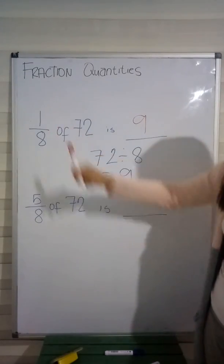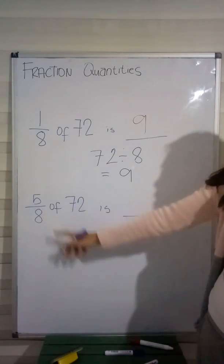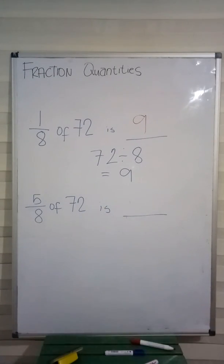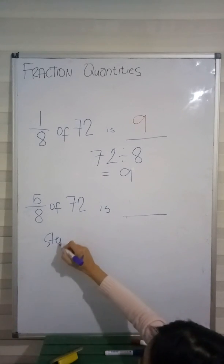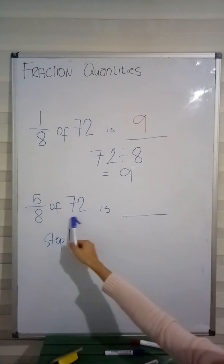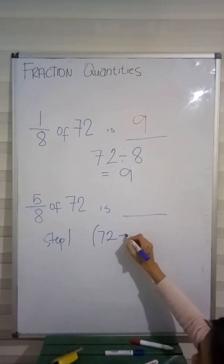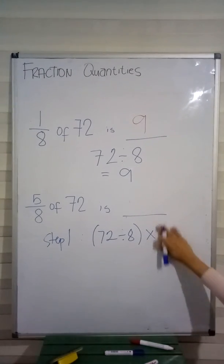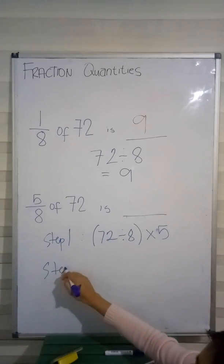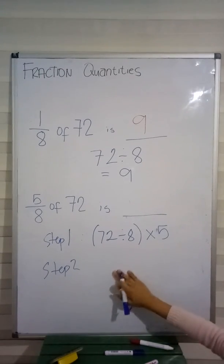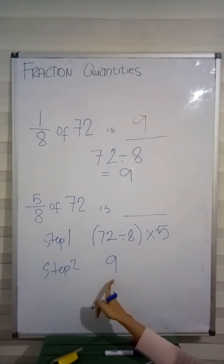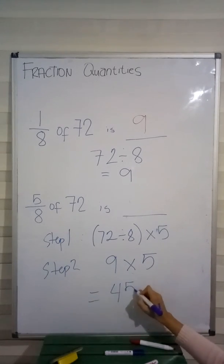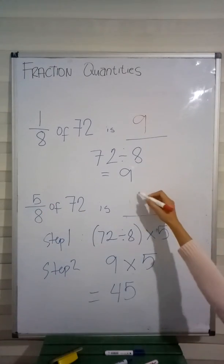That is when our numerator is only 1. But if our numerator is not 1 — like in the example 5 eighths — we need to get the 5 eighths of 72. The first step is to divide our number 72 by our denominator 8, so (72 divided by 8), and of course we multiply by our numerator 5 — times 5 outside the parenthesis. Step 2: 72 divided by 8 equals 9, and we still have times 5. So, 9 times 5 equals 45. Therefore, 5 eighths of 72 is 45.